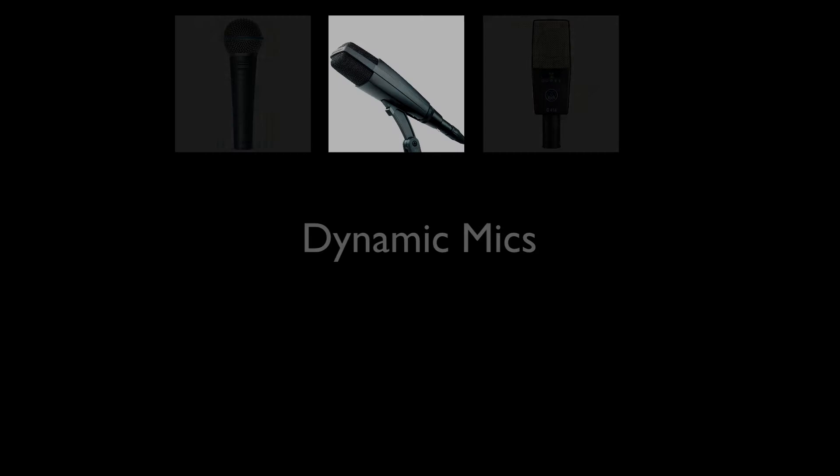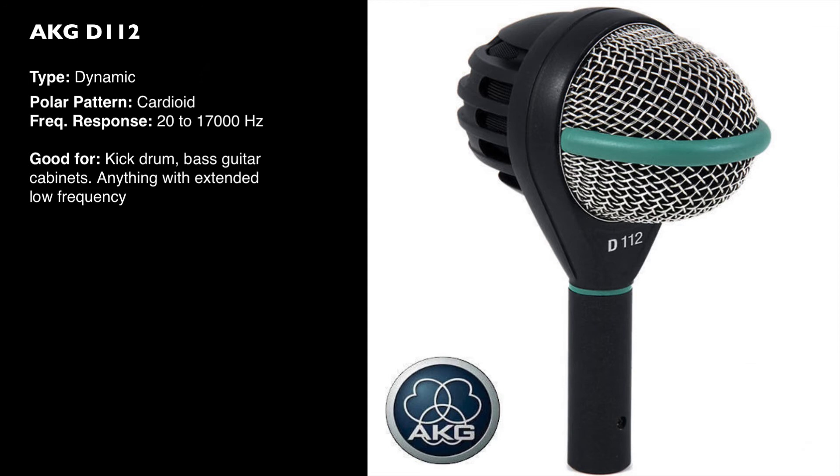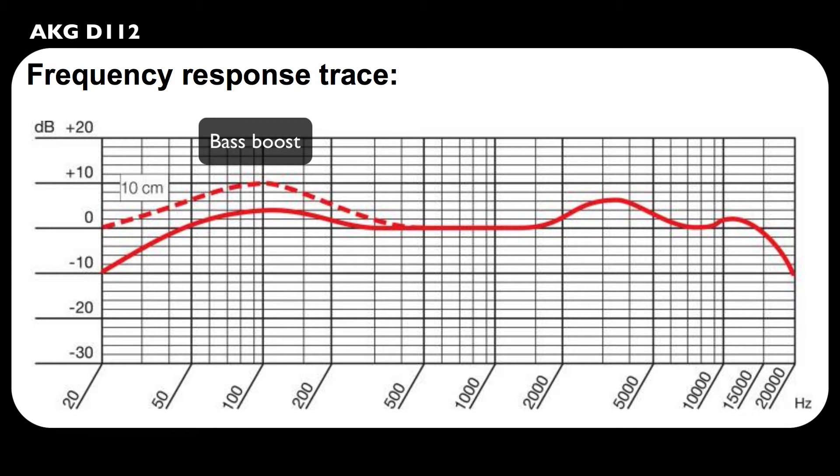We're going to look at dynamic microphones, and the first one is the AKG D112. This is really good for kick drum or bass guitar, low frequency type instruments. You can see here one of the reasons for that is because it's got a pronounced bass boost, but also if you look further up the spectrum it has a presence boost between 2 and 5 kilohertz, so it has a fair amount of attack but also emphasizes the low frequencies, which is why it's good for these sources.